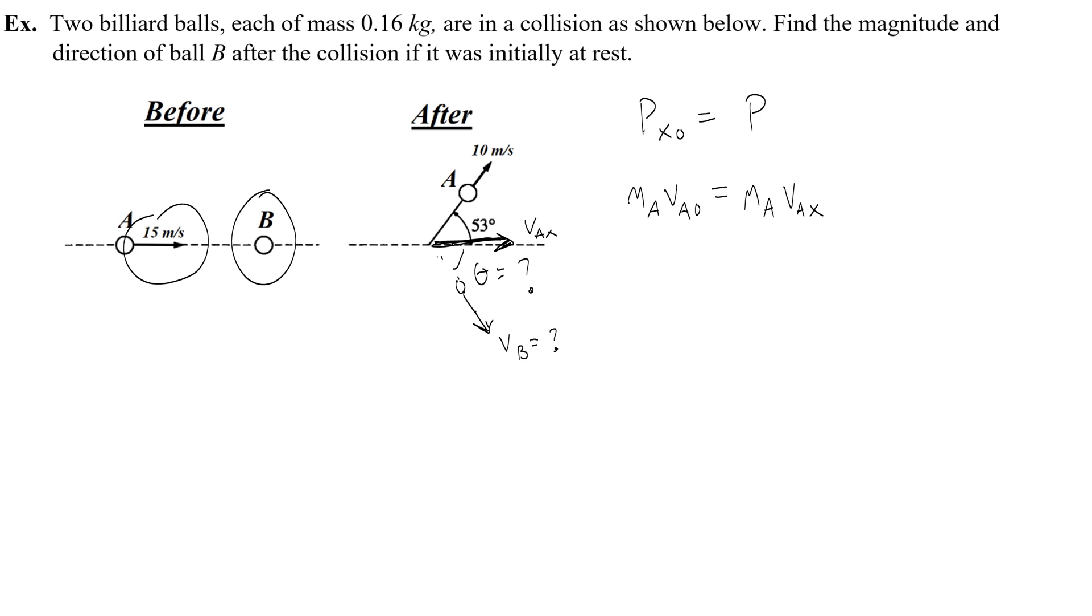And of course vb would also have this component. If I draw vb over here to make it look a little easier, I'll draw it as the hypotenuse. I know there's going to be some x component to that velocity and the momentum of b in the x direction would also be added together so that we have a conservation before and after. We actually have enough information to solve what the x component of vb is so let's go ahead and do that.